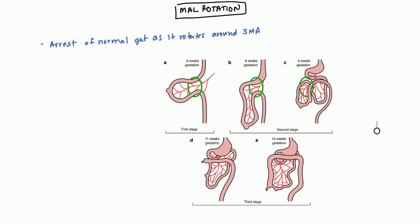In this video today we're going to be discussing malrotation. Malrotation of the gut is primarily defined as an arrest of the normal gut as it rotates around the superior mesenteric artery. Before we can understand this, it's obvious that we need to go over the embryology of rotation.